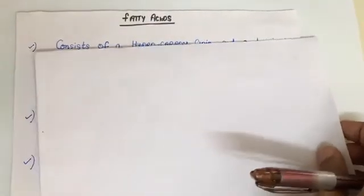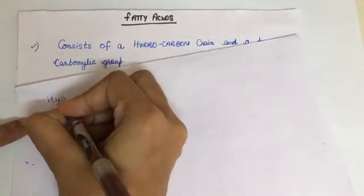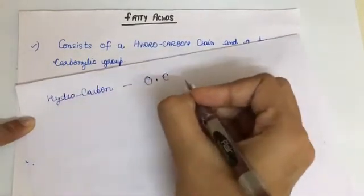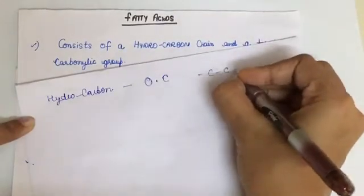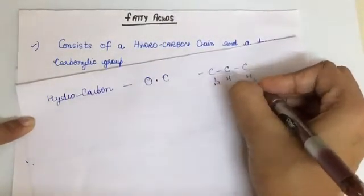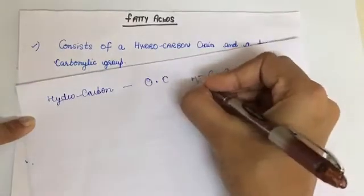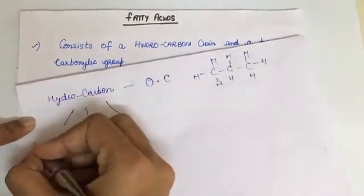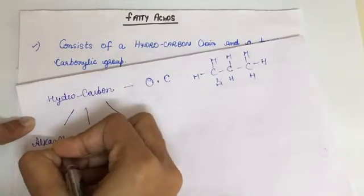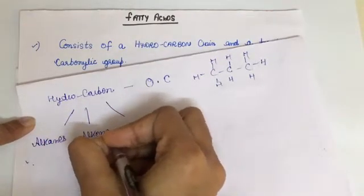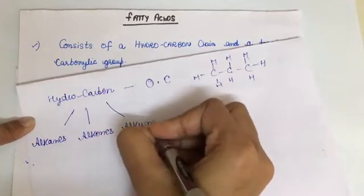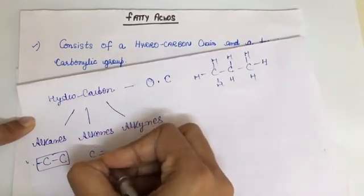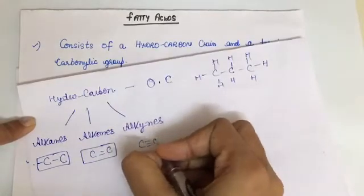A hydrocarbon is an organic compound consisting entirely of carbon and hydrogen. There are three groups of hydrocarbons: alkanes, alkenes, and alkynes. Alkanes have a single bond between carbon atoms, alkenes have a double bond in between, and alkynes have a triple bond between carbon atoms.